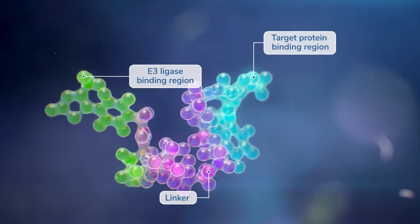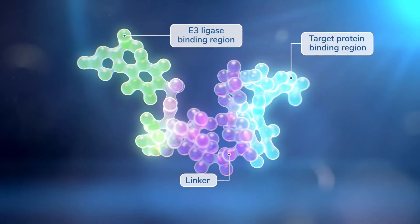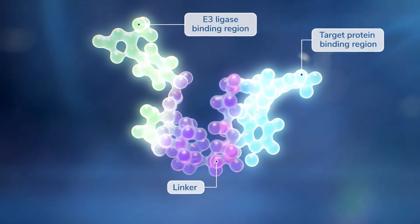PROTAC protein degraders are small molecules composed of two binding regions connected by a linker.